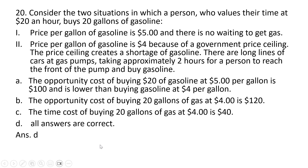Answer D is correct — all answer choices are correct. The opportunity cost of buying gasoline at $5 per gallon is $100 and is actually lower than buying at $4 per gallon. At $4 per gallon, 20 gallons costs $80, but you must add the time cost: two hours at $20 an hour is another $40, so $80 plus $40 equals $120. The time cost of buying gasoline at $4 per gallon is the two hours waiting, valued at $20 an hour, giving 2 times $20 equals $40.